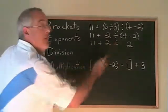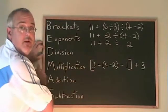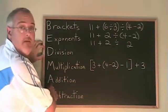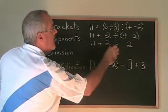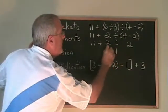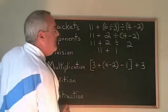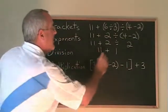Now we have a plus and a divided by. The D for division comes before the A for addition. So we're doing the divided by. 2 divided by 2 is 1. We copy down the 11 plus. We have 11 plus 1, and the answer is 12.